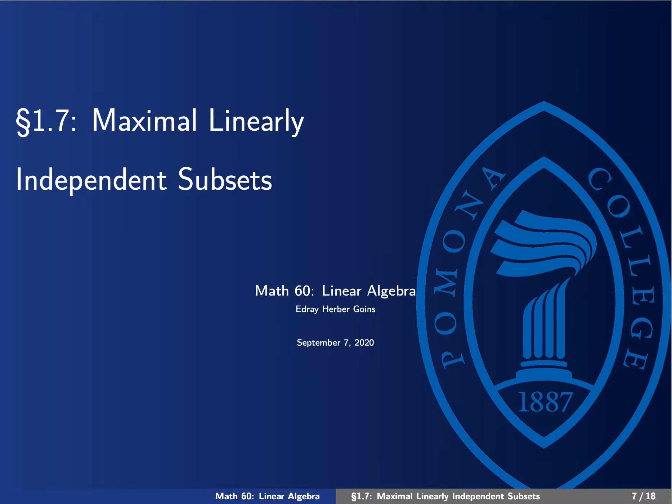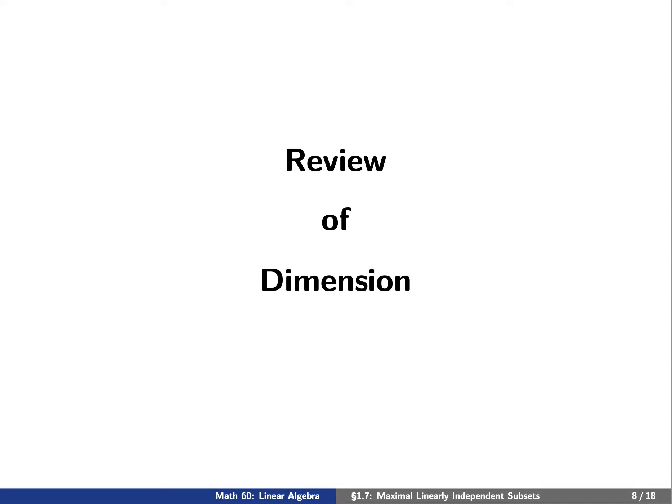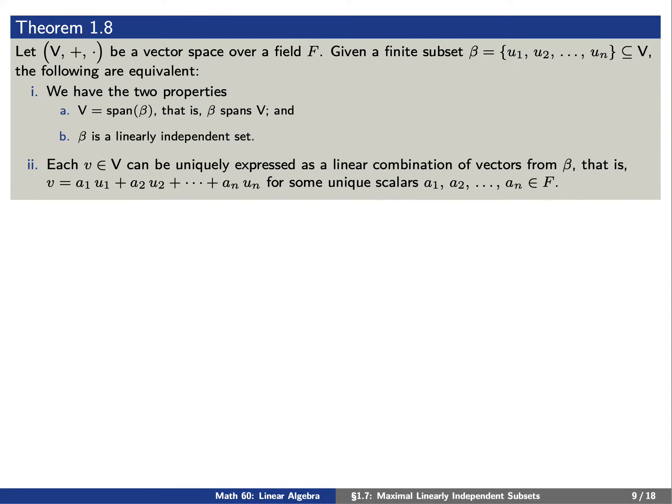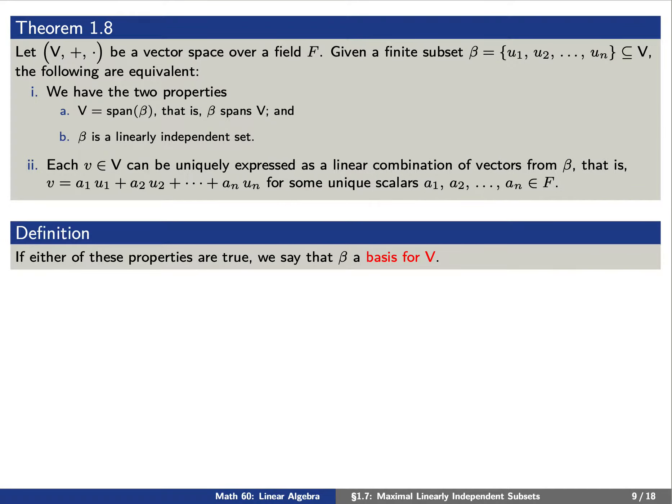Today we're going to talk about maximal linearly independent subsets. To this end, let's review some ideas from before. Say that we have a vector space V over a field F. Given a finite subset beta, the following two statements are equivalent: beta spans V and beta is a linearly independent set; and every element v can be expressed uniquely as a linear combination of vectors from beta. If either of these properties is true for beta, we say that beta is a basis for our vector space V.